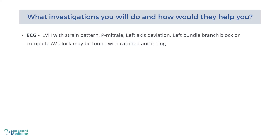ECG may reveal LVH with strain pattern, P mitrale, and left axis deviation. Left bundle branch block or complete AV block may be found with a calcified aortic ring. Chest radiograph may show left ventricular hypertrophy and a calcified aortic valve. Post-stenotic dilatation of the ascending aorta may also be noticed in cases of aortic stenosis secondary to bicuspid aortic valve.